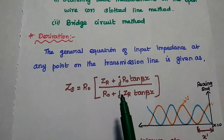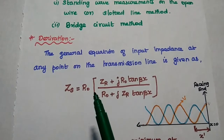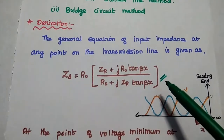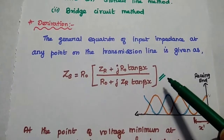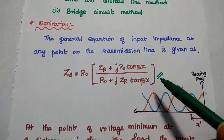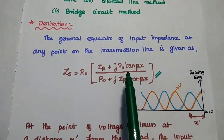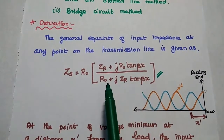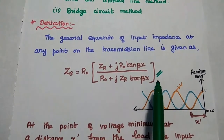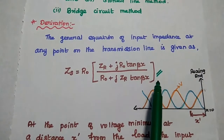For that, we can consider the general equation of input impedance at any point on the zero dissipation line. We have already derived the input impedance for the dissipationless line in the previous lecture video. Zs is equal to R0 times (ZR plus j·R0·tan(βx)) divided by (R0 plus j·ZR·tan(βx)). This is the general equation of input impedance for the zero dissipation line.